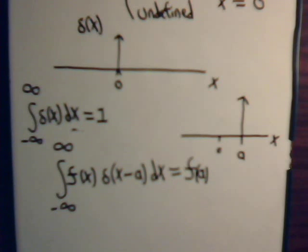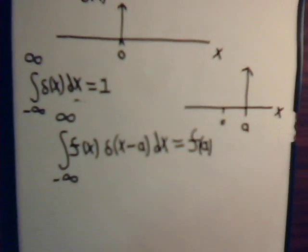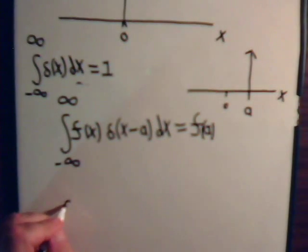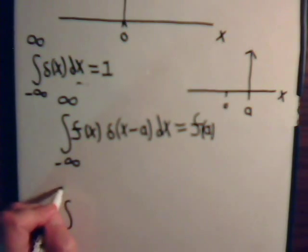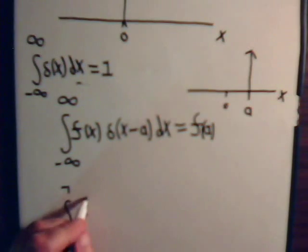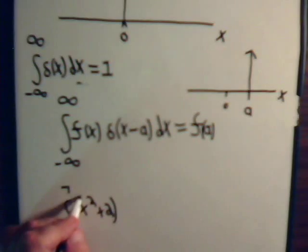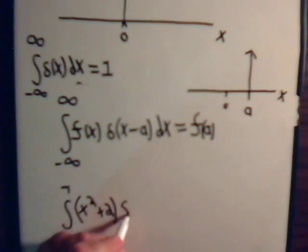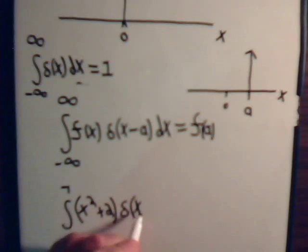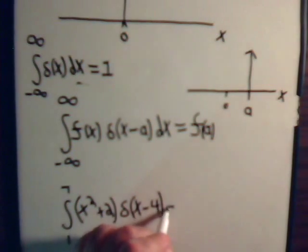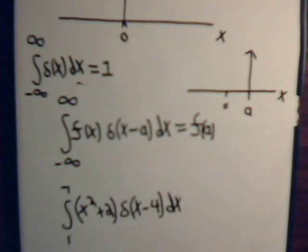Let's just consider a couple of simple numerical examples. Suppose we had the integral from 1 to 7 of x squared plus 2 times the Dirac delta function of x minus 4 dx.